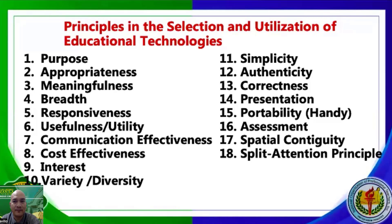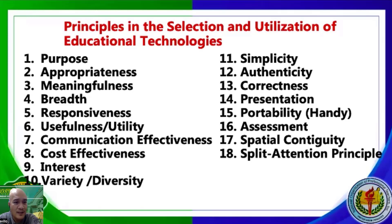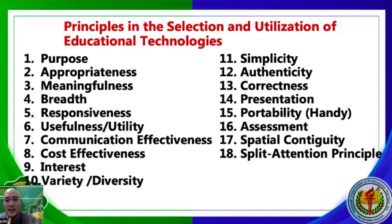Two is Appropriateness — they should be appropriate to the level intended. You need to check the vocabulary level. Don't use high-faluting words if students are in Grade 1, 2, or 3. Consider difficulty of concepts. If you're in Grade 12, it is expected that concepts will be more difficult. Don't teach Grade 12 content to Grade 7 students. Consider methods of development and the interests of your students — check if the educational technology you will use is appropriate.